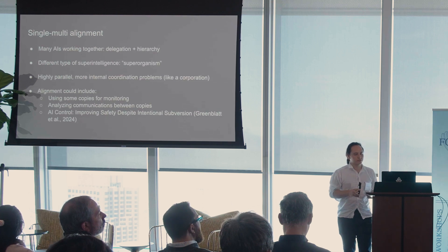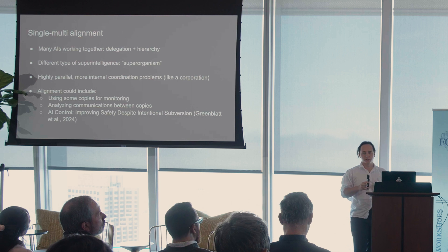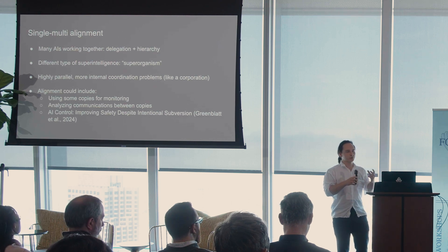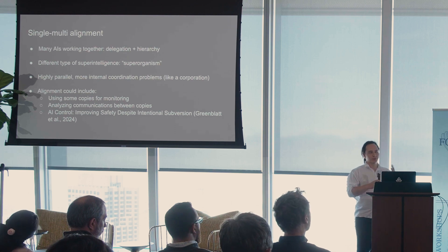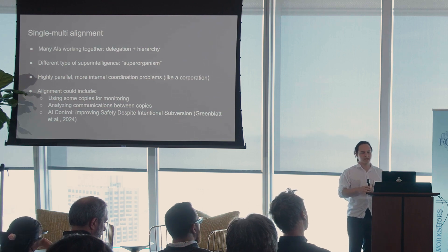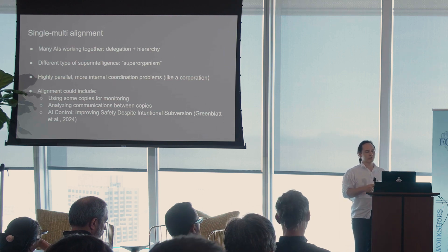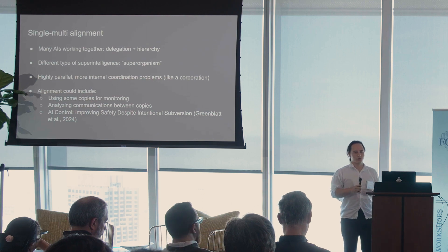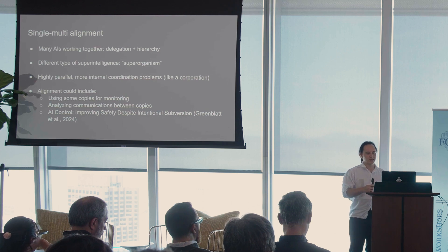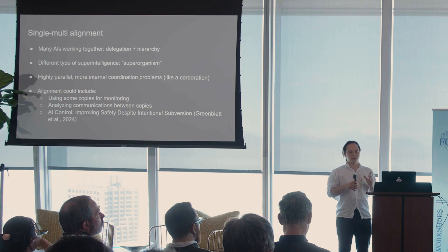Moving on to single-multi alignment — aligning many AIs to a single human — I think this category has been underrated. People have been working with the idea of a singular superintelligence composed of a single mind or entity. What we're actually on track towards is more like a super organism — many different copies of a neural network working together, delegating problems to each other in some kind of hierarchy. We're already seeing progress with copies of GPT-4 calling other copies, delegating tasks, and reporting results. Even when highly capable, this looks quite different from the traditional conception of a superintelligence.